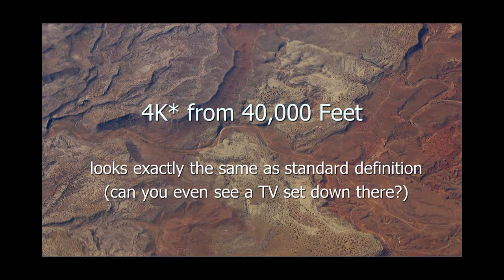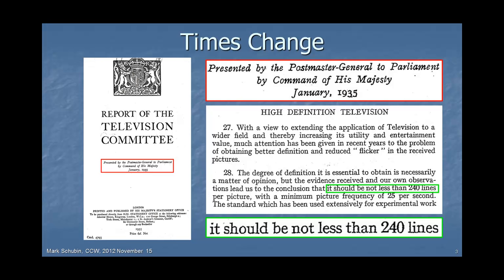So what is the view of 4K from 40,000 feet? It looks exactly the same as standard definition — you can't even see a television set down there. Times have changed. This is a report issued in 1935 to the British Parliament about high-definition television, and they define high-definition television and say it should be not less than 240 lines.